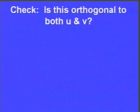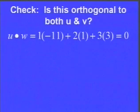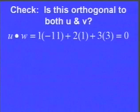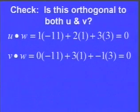Let's double-check — a good idea if you have time — that this vector w = (−11, 1, 3) is orthogonal to both u and v. To check orthogonality, you dot the two vectors. So w·u = 1·(−11) + 2·1 + 3·3 = 0. It does add up to zero. And v·w = 0·(−11) + 3·1 + (−1)·3 = 0 as well. So it really is orthogonal to both vectors.